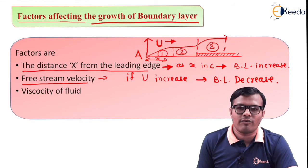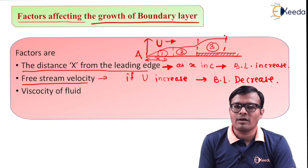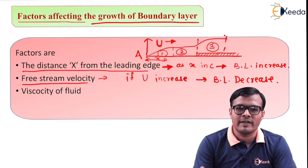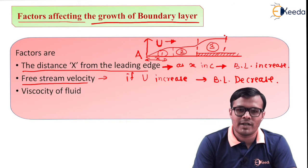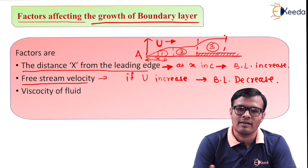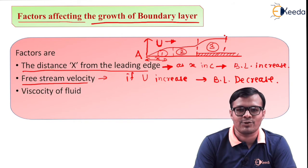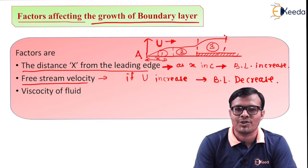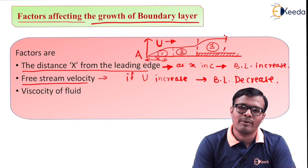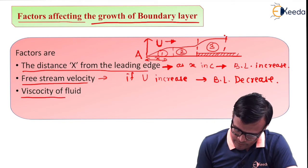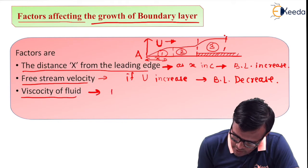Next is viscosity of fluid. Reynolds number formula contains various terms such as rho which is density, v which is velocity, l is characteristic length, upon mu. Mu is the dynamic viscosity. These are the factors on which boundary layer actually depends. Boundary layer depends on Reynolds number, and Reynolds number depends on four factors. So third factor is viscosity of fluid.